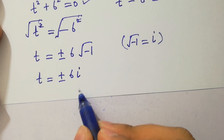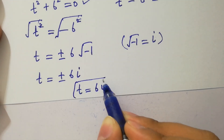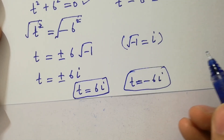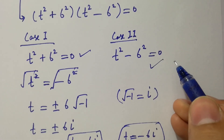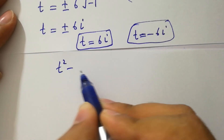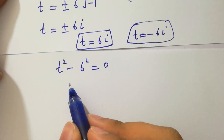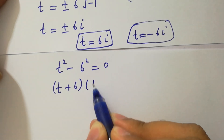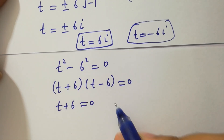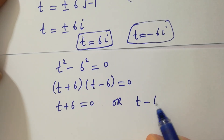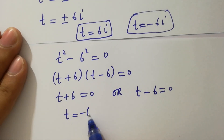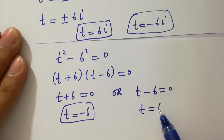So we have the solution t equals 6i. Now for case two: t² minus 6² equals 0. Applying the difference of squares formula a² minus b² equals (a + b)(a − b), we get (t + 6)(t − 6) equals 0. Either t + 6 equals 0 or t − 6 equals 0, giving t equals minus 6 and t equals plus 6.